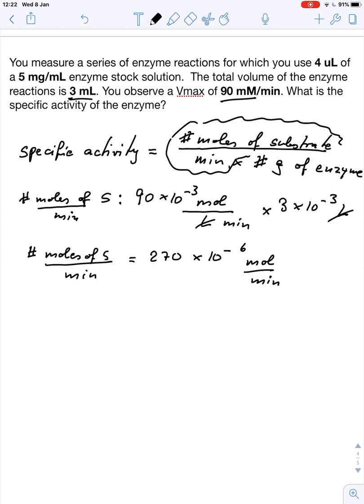And now we just need to calculate the number of grams of enzyme that we have. And we have 4 microliters. We use 4 microliters of a stock solution which is 5 mg per milliliter. So we have 5 times 10 to the minus 3 g in 1 times 10 to the minus 3 liters. So here the 10 to the minus 3 that's our milligram and 10 to the minus 3 liters that reflects the milliliters that we have. And I multiply that by the volume of enzyme. So that's 4 times 10 to the minus 6 liters. That's our 4 microliters.